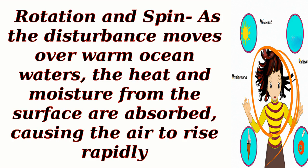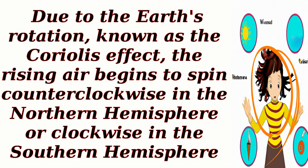Rotation and spin: as the disturbance moves over warm ocean waters, the heat and moisture from the surface are absorbed, causing the air to rise rapidly. Due to the Earth's rotation, known as the Coriolis effect, the rising air begins to spin counterclockwise in the northern hemisphere or clockwise in the southern hemisphere.